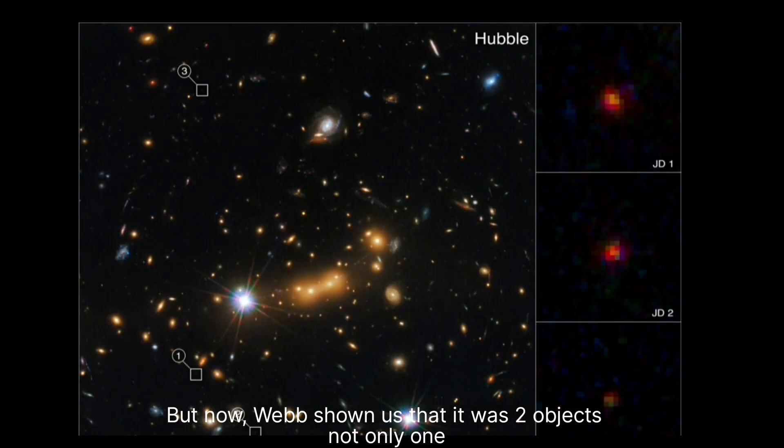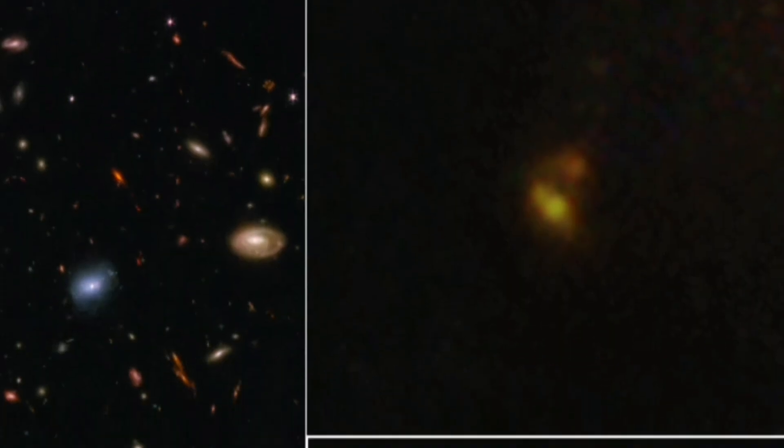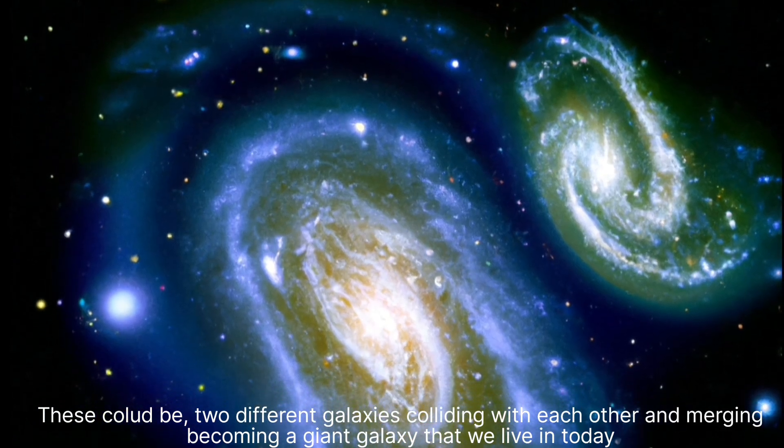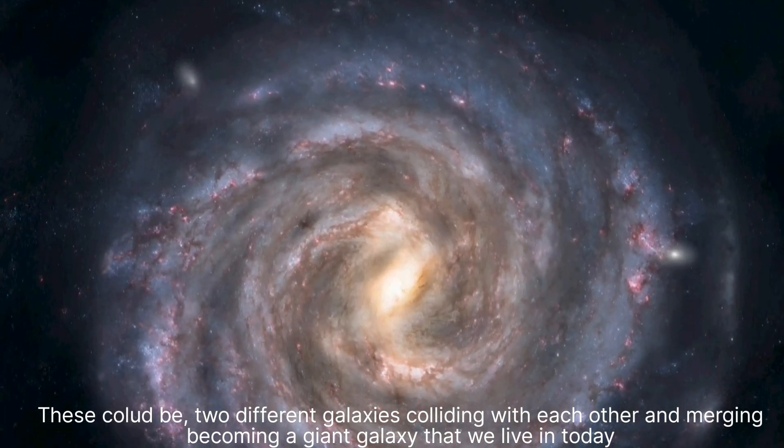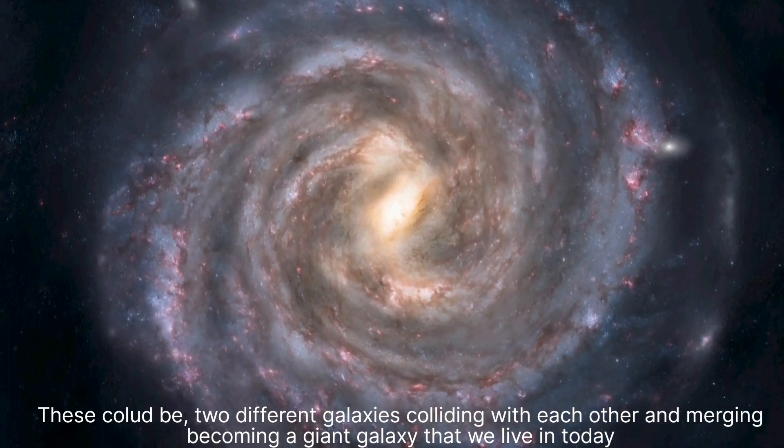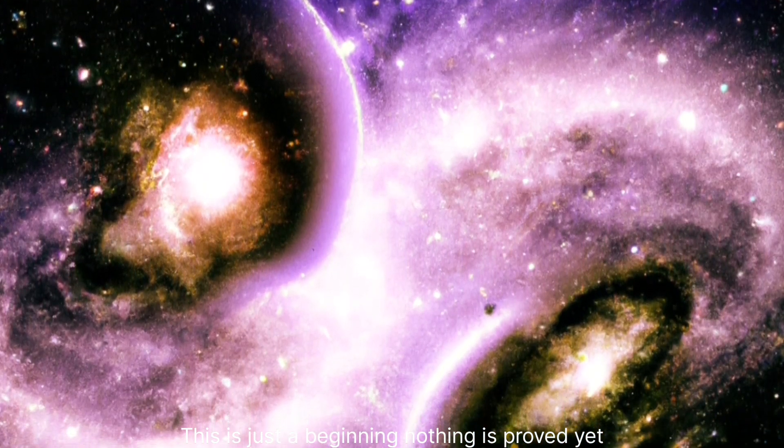But now, Webb has shown us that it was two objects, not only one. These could be two different galaxies colliding with each other and merging, becoming a giant galaxy that we live in today. This is just the beginning.